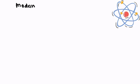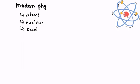The last part is modern physics. In modern physics we are going to learn about atoms, nucleus, and the dual nature of light, where we understand that all matter has both particle nature and wave nature. Finally, we are going to learn about electromagnetic waves. This is the whole syllabus for the HSTR exam, briefly organized into separate categories so that we understand what we are going to learn.